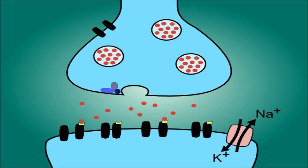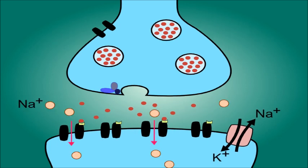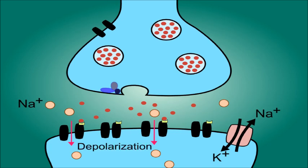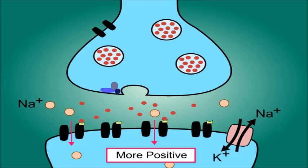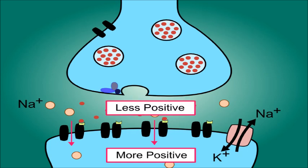When the ion channels open, they allow positive sodium ions to enter the cell. This will cause the environment inside the neuron to depolarize, where the electrical charge on the intracellular space will become more positive, and the electrical charge outside the neuron will become less positive.